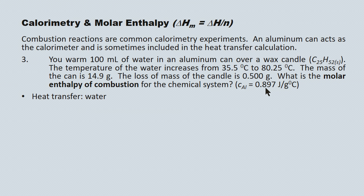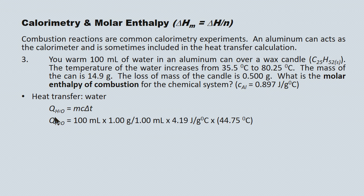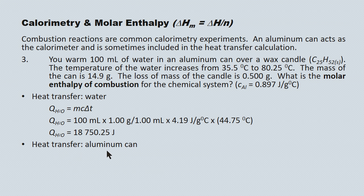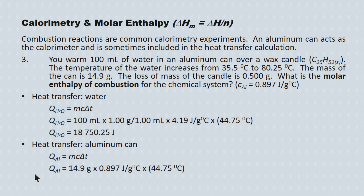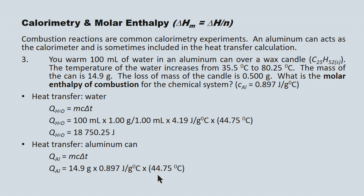Here's the heat transfer piece into the water as a first step: Q equals MC delta T. We substitute in and use a conversion factor to convert mL of water into grams, giving us our Q for the water. Then we do a heat transfer calculation for the aluminum can using the same formula, but with the specific heat capacity for aluminum — 0.897 joules per gram degree Celsius — instead of water. The change in temperature of the aluminum can is the same as that for the water, which is an approximation we use in calorimetry: we assume the average temperature change of the calorimeter equals that of the water.